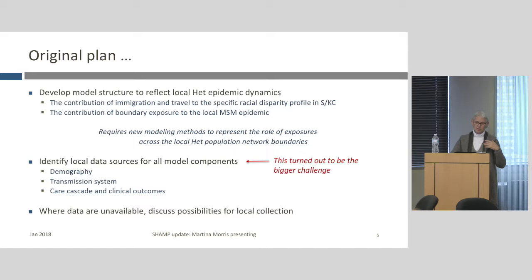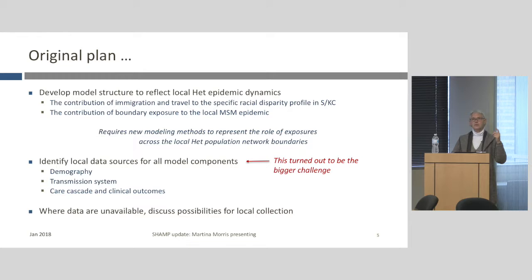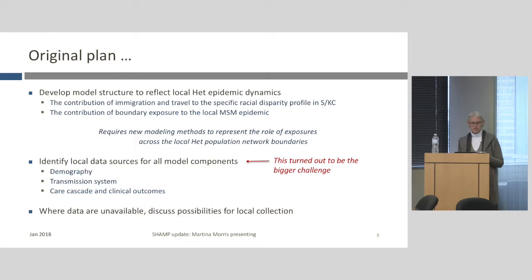One of the key things we wanted to look at was the contribution of immigration and travel to the specific racial disparity profile here in Seattle King County. We're also interested in boundary exposure for heterosexuals to the local MSM epidemic. There's a paper by Alex Oster at CDC that analyzed phylogenetic sequences across the U.S. and found that about 36% of heterosexual females actually clustered more closely with an MSM sequence than with a heterosexual male sequence. For heterosexual women in the western region, that figure was over 50% — clear evidence of boundary exposure.